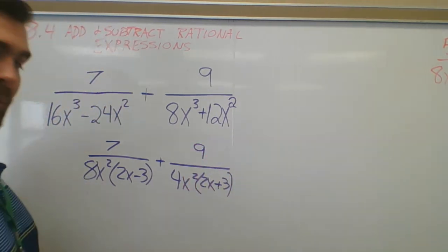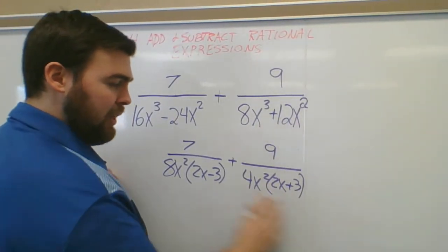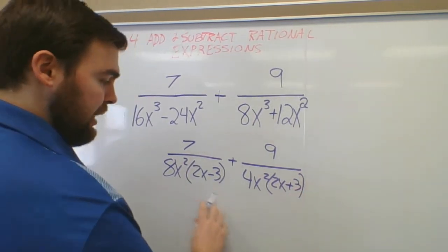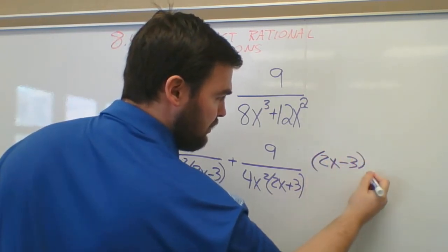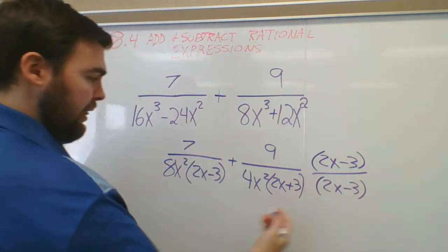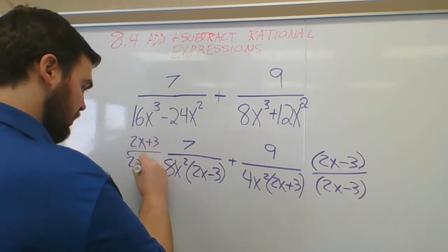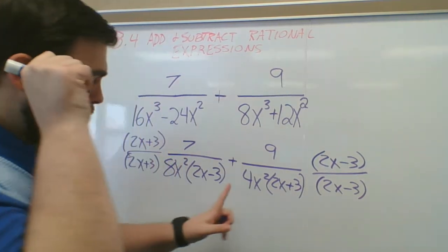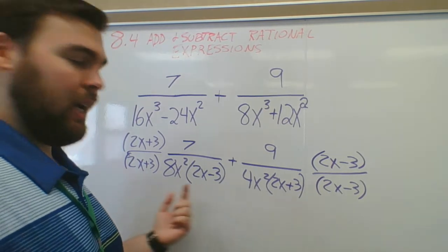For the least common denominator, I'm looking at 2x minus 3 and 2x plus 3 — they're very similar but they don't match, so I still have to multiply. This side needs a (2x minus 3) over (2x minus 3), and this side needs a (2x plus 3) over (2x plus 3). Also, 8x squared and 4x squared don't match — how can I make 4x squared become 8x squared?